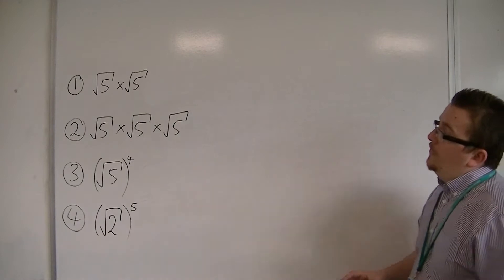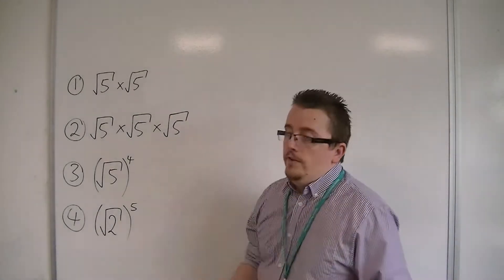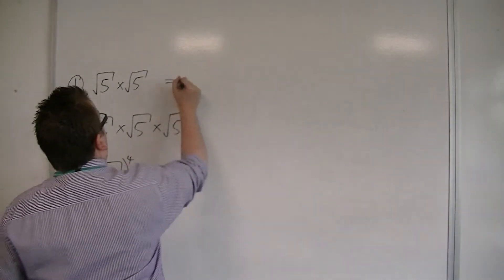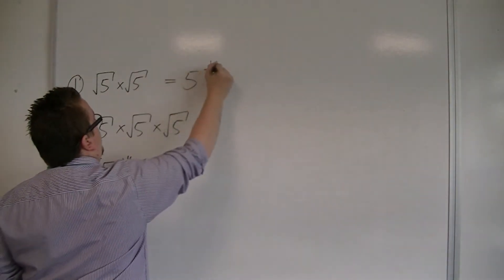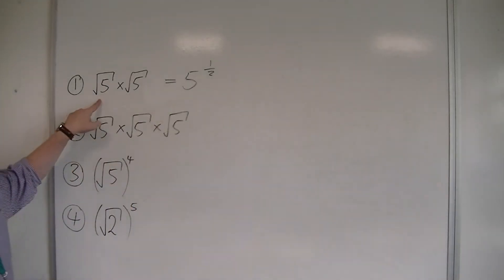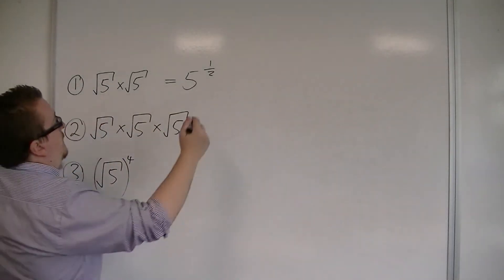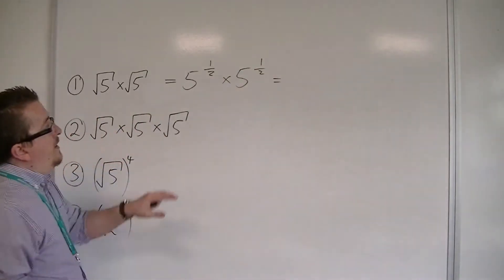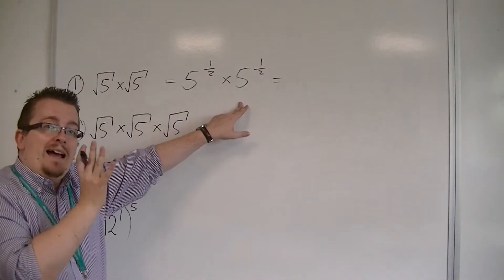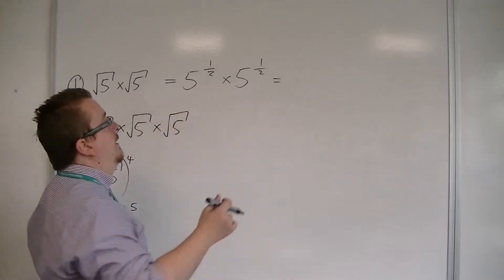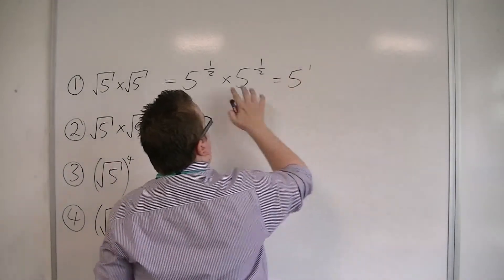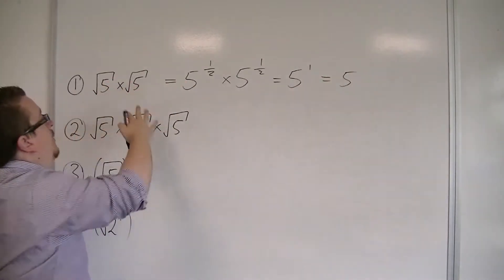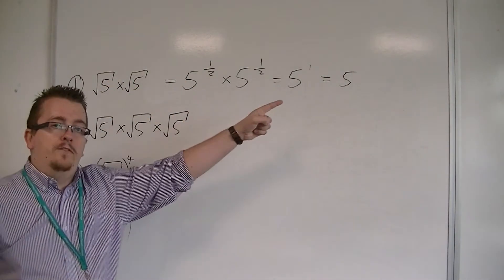We're going to start off with root 5 times root 5. You could think of this as 5 to the power of a half, because the half is representative of that radical, that square root, times by 5 to the power of a half. We know that if the base numbers are the same, you can add the indices when you multiply. So that's just 5 to the power of 1 — one half plus one half is 1 — and so root 5 times root 5 is just 5.